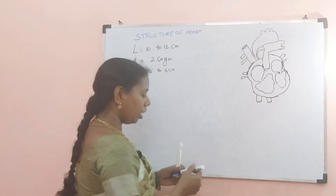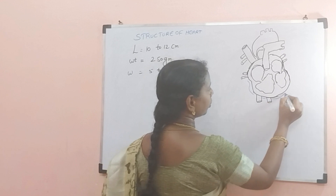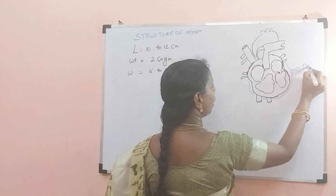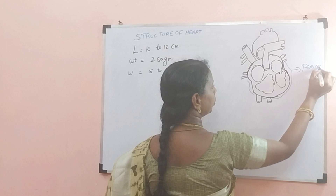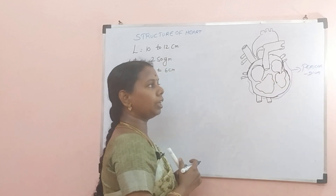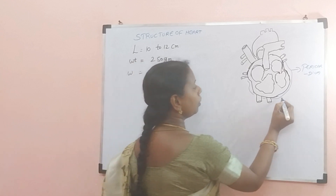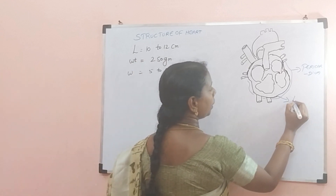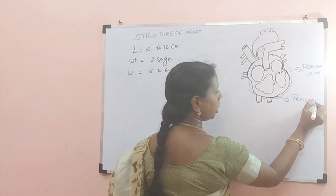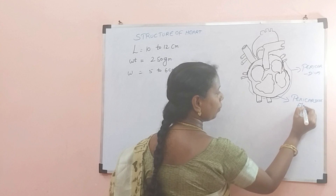We can find an outer layer called the pericardium. There are two pericardial layers — outer and inner pericardium. In between, pericardial fluid is present. The purpose of this pericardial fluid is to reduce friction.